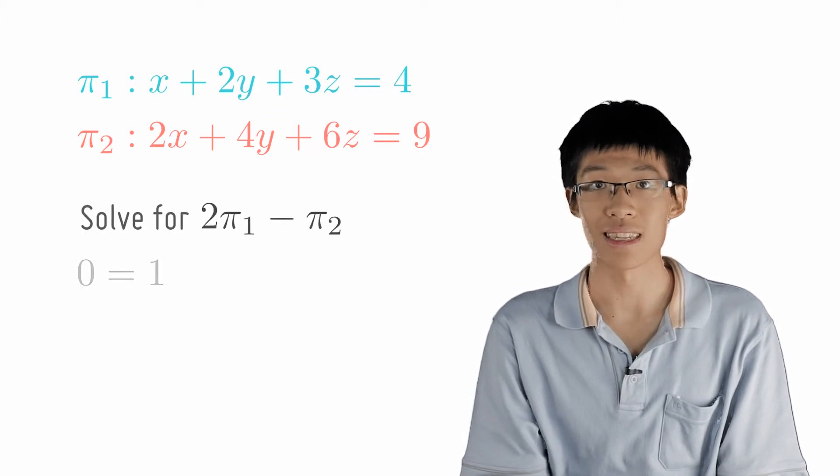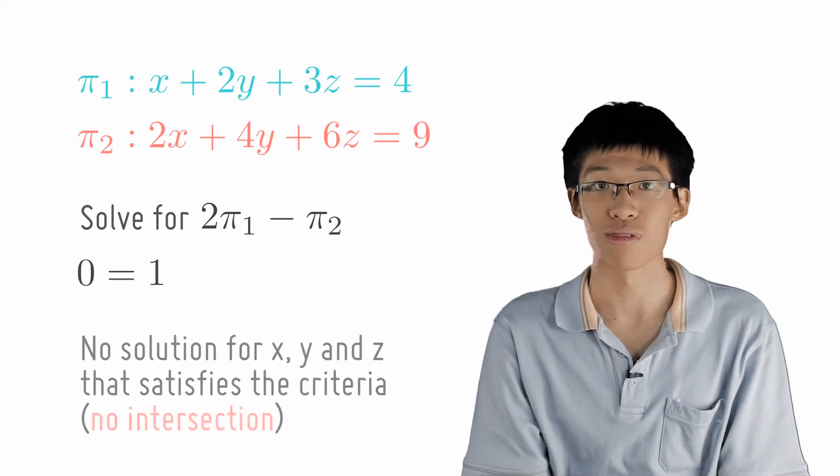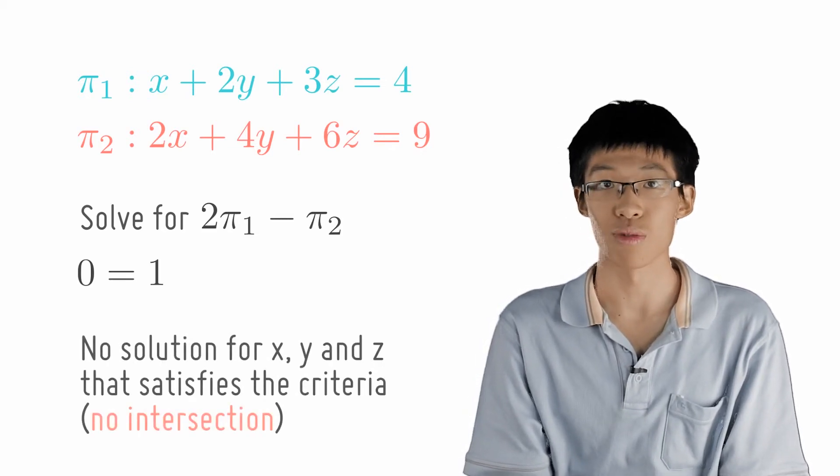On a side note, if you notice the two plane equations carefully, taking two times the first equation and subtracting from equation 2, we get 0 equals to 1.